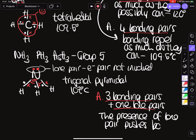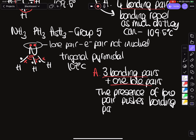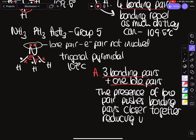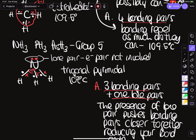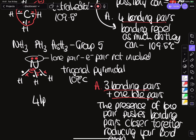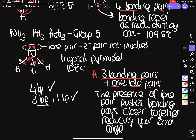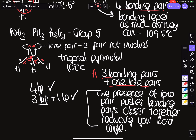For the examiner, the marking points for comparing tetrahedral versus pyramidal are: four bonding pairs for tetrahedral; three bonding pairs and one lone pair for pyramidal; and the lone pair repels the bonding pairs even closer together, reducing the bond angle from 109.5 degrees to 107 degrees.